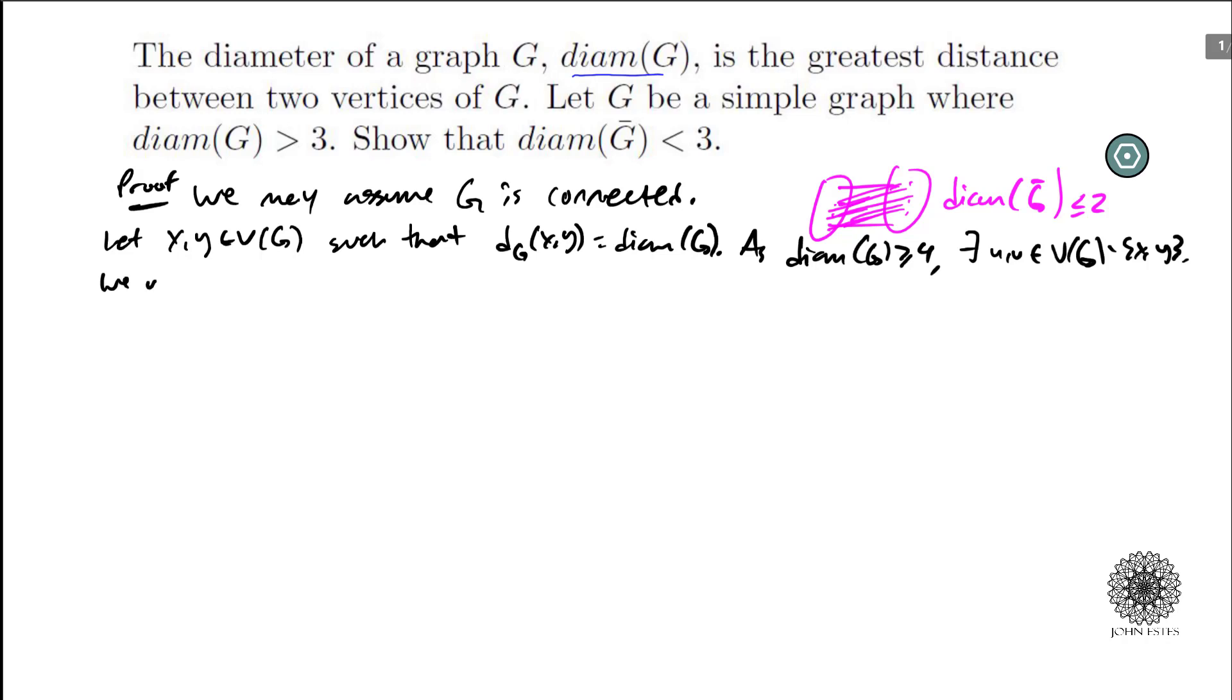Okay so that just means that there are vertices other than X and Y. And what we're going to show is we'll show that the distance for these guys in the complement is always going to be less than 3. And we don't have to really consider X and Y here because since they are not adjacent in G, they will be adjacent in G complement.